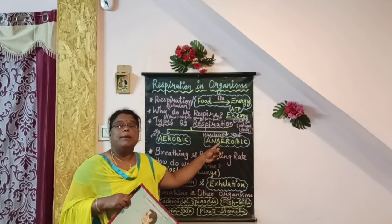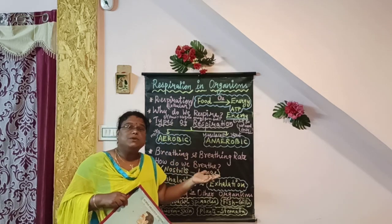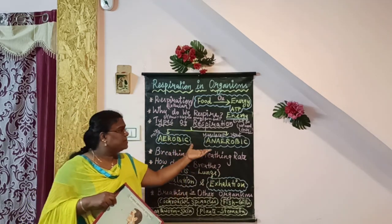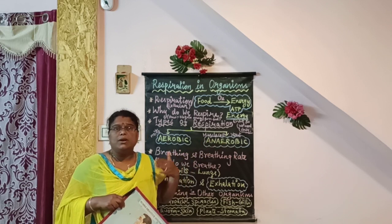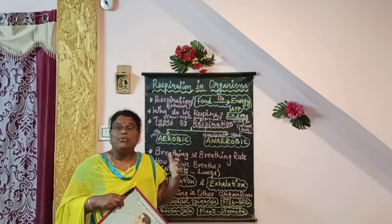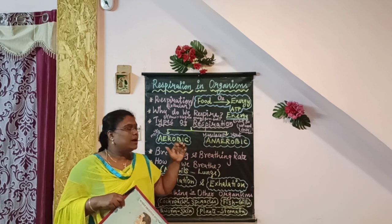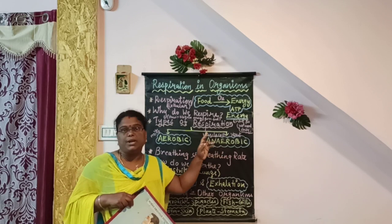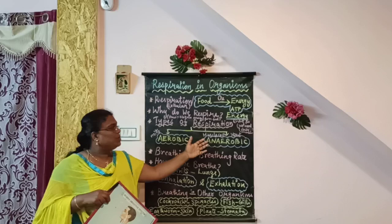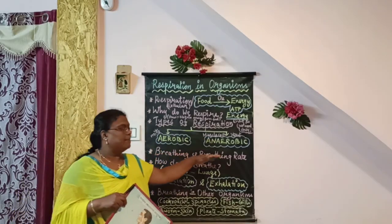The second type is anaerobic respiration — the process of breakdown of food materials into energy in the absence of oxygen. Sometimes, during heavy exercises, there is unavailability of enough oxygen and our muscle cells rarely undergo anaerobic respiration. Apart from that, many anaerobic organisms undergo anaerobic respiration for their survival. These are the two types of respiration.